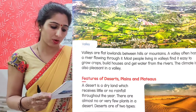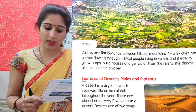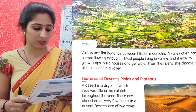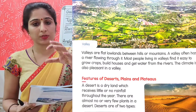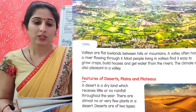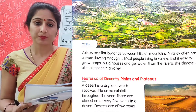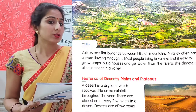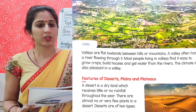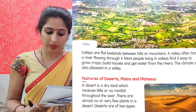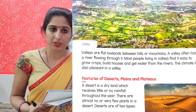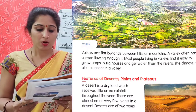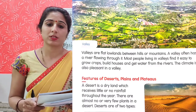Valleys are flat land between hills or mountains. A valley often has a river flowing through it. Most people living in valleys find it easy to grow crops, build houses, and get water from the rivers. The climate is also pleasant in a valley. The lowland between hills or mountains is called the valley, and rivers form from the melting snow of mountains.